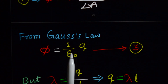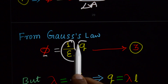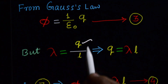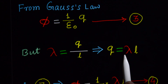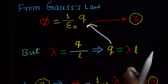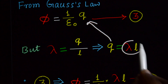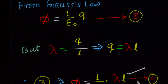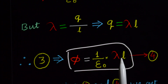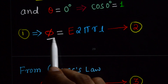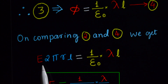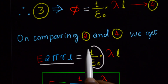Now applying Gauss's Law: flux = (1/ε₀) × total charge enclosed by the Gaussian surface. We know linear charge density λ = Q/L, so Q = λL. Substituting this Q value into the Gauss's Law equation gives us our fourth equation: flux = (1/ε₀) × λL. Comparing equation 2 and equation 3 we get: E × 2πRL = (1/ε₀) × λL.